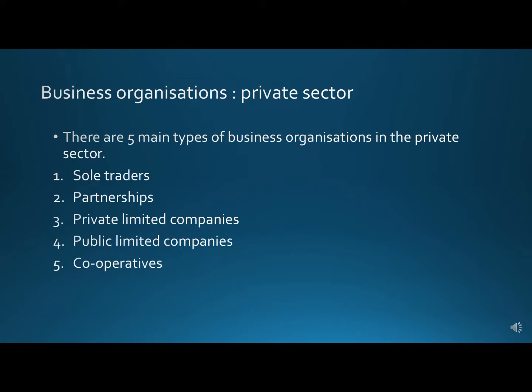The five types of business organization in the private sector are: sole traders, partnerships, private limited companies, public limited companies, and cooperatives. The private sector means these are organizations owned by private individuals. These private individuals make all the decisions regarding what to produce, how to produce, and for whom to produce. Private sector organizations mainly have the main goal of profit maximization.